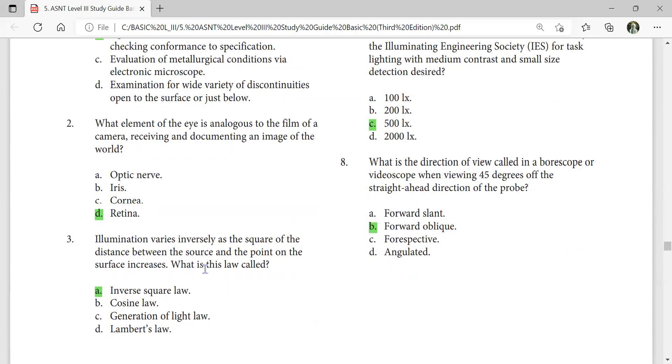Illumination varies inversely as the square of distance between the source and the point on the surface increases. What is the law called? Inverse square law.